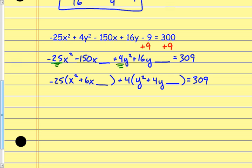Now I complete the square. B divided by 2, squared, gives me 9 for the first group, and 4 for the second group. Whatever I do to one side I do to the other. The 9 inside the first parentheses is multiplied by −25, so I'm actually adding −225 to that side. The 4 inside the second parentheses is multiplied by 4, so I'm adding 16 to that side.